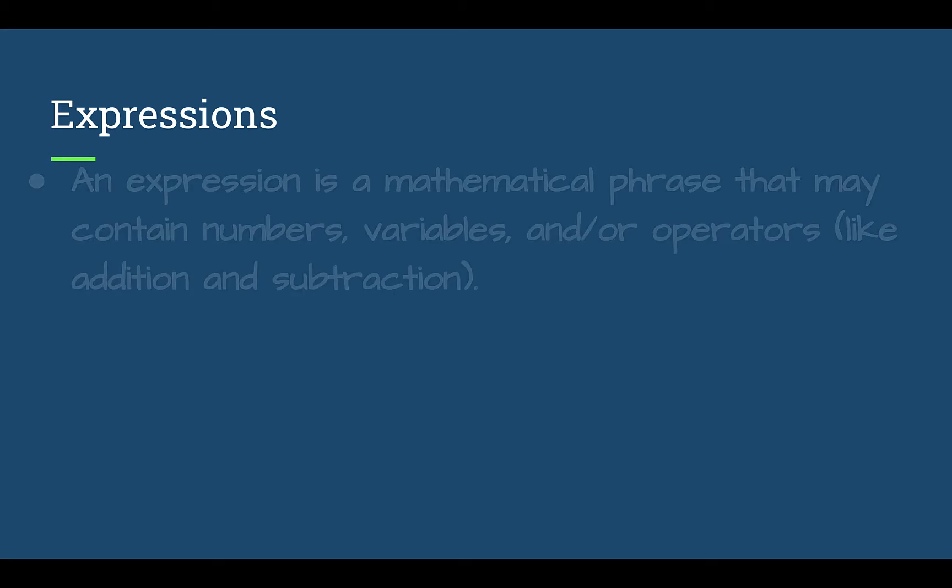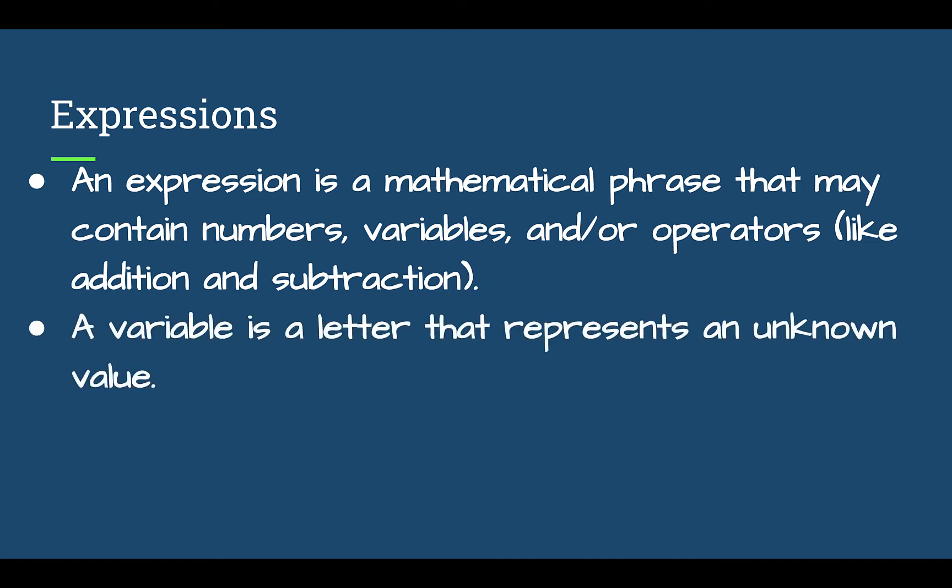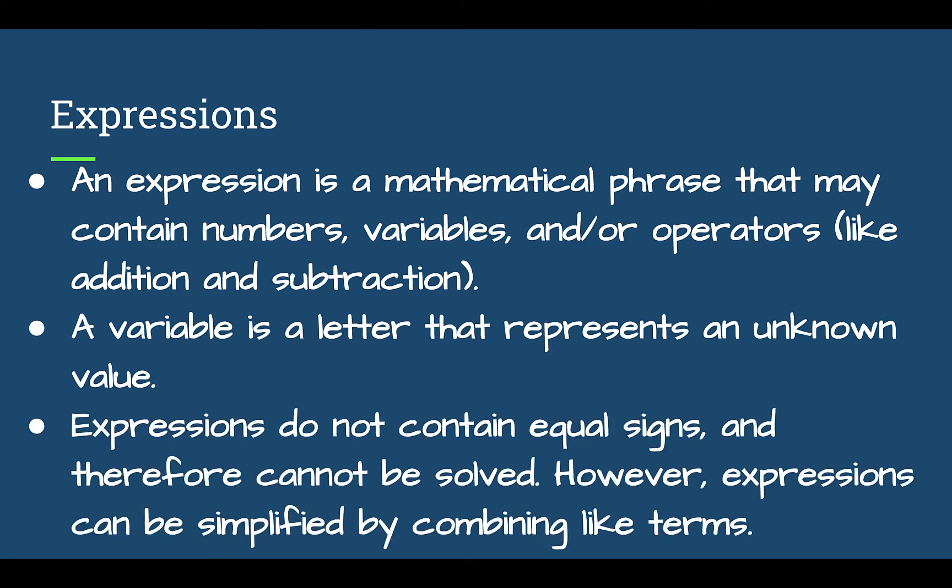This lesson is a lot of vocabulary. So we're going to start with parts of an expression. An expression is a mathematical phrase, and it might have numbers, variables, or operators like adding, subtracting, multiply, divide, square root. There's a lot of other ones. But there is no equal sign. A variable is a letter or symbol that represents an unknown value. And expressions, as I said, do not contain equal signs.